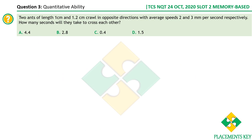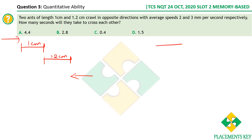Two ants of length 1 cm and 1.2 cm crawl in opposite directions. How many seconds will they take to cross each other? This is equivalent to a train problem: one ant has length 1 cm and the other 1.2 cm.